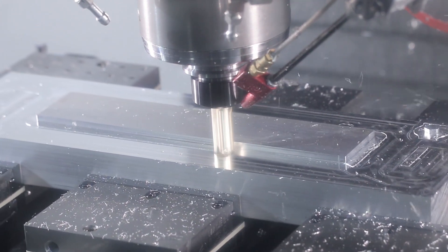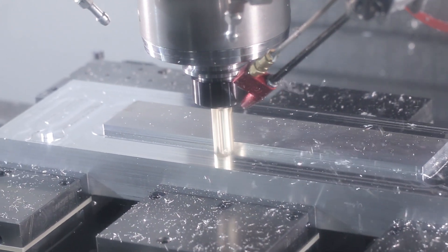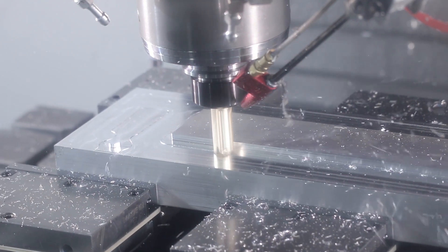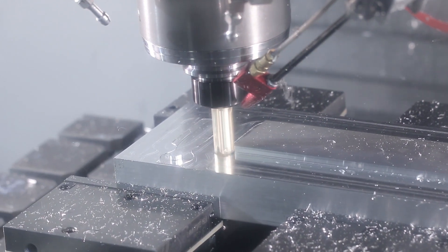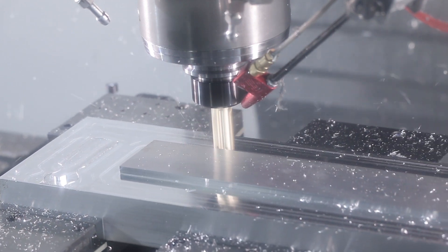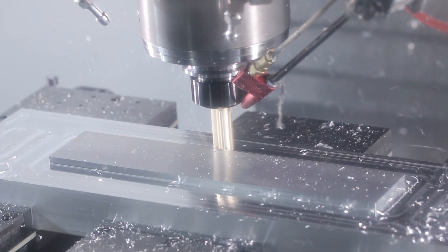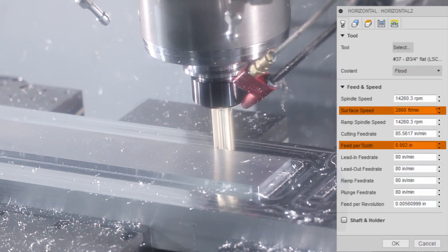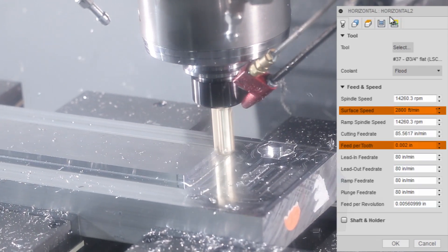Here we're doing a horizontal op in Fusion 360. The floor needs to be cleaned up. The shear hog is not the right tool to give us a really good mating surface between this aluminum top and the cast iron body of the orange. 2,800 surface feet per minute, 0.002 per tooth, taking it easy at 85 inches a minute.